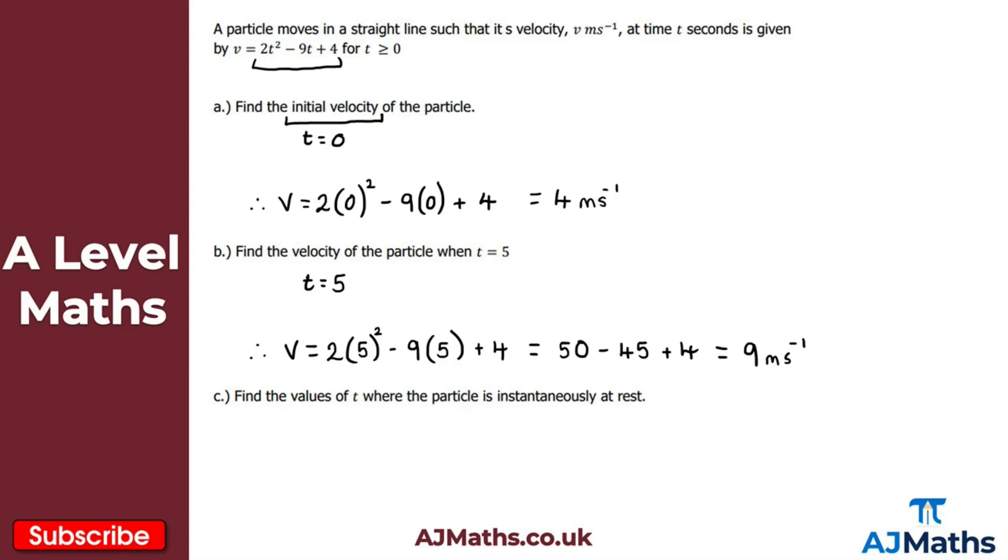To finish here, we've got part C where it says find the values of t where the particle is instantaneously at rest. When the particle is instantaneously at rest, that is when the velocity here is equal to zero. So for part C, the idea here is that v is equal to zero.